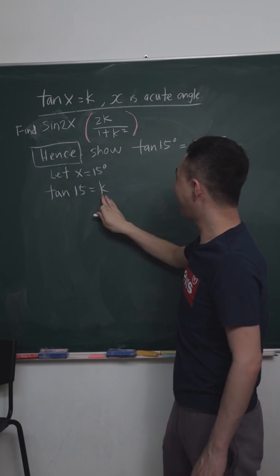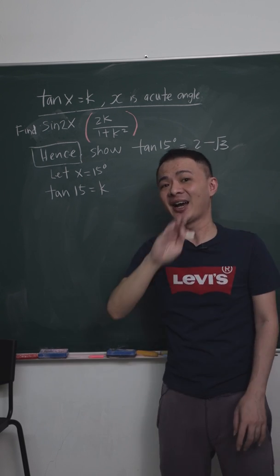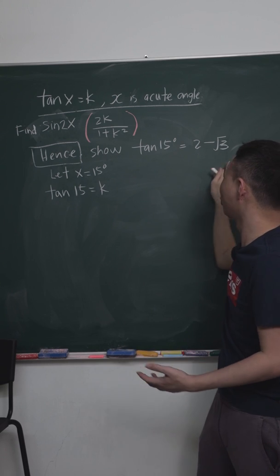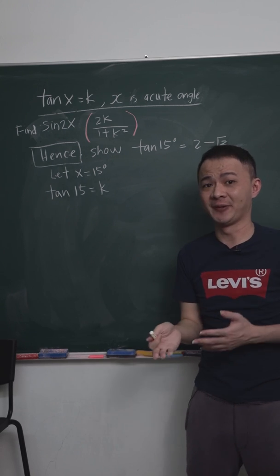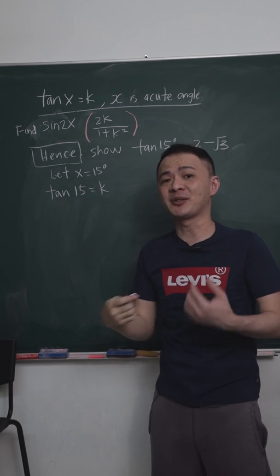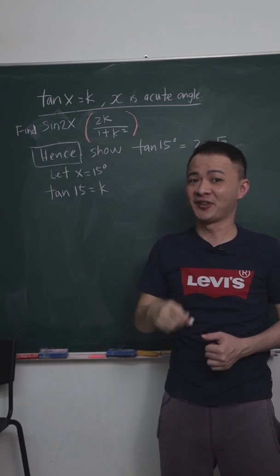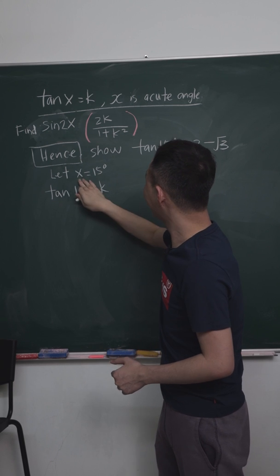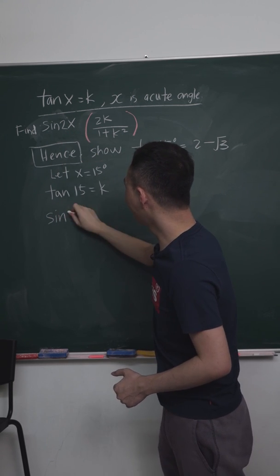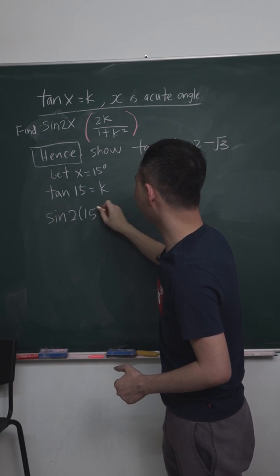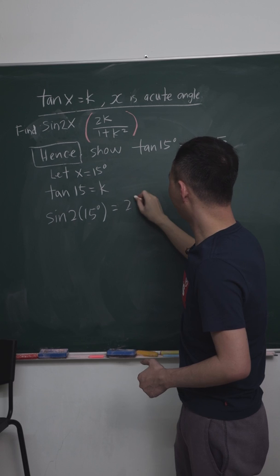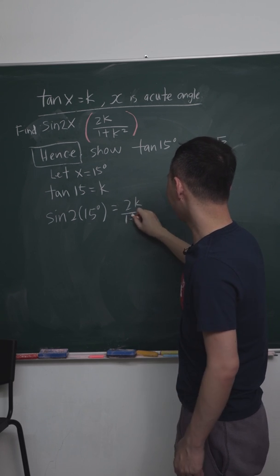Means if I can make k the subject, I can find the tangent 15. And then of course I need to show tangent 15 equals 2 minus square root 3. Second idea is, I sub the x into the sine 2x because I already did that in my first video. Therefore I sub into here, I will get sine 2 multiplied by 15 degrees, which is my x is 15 degrees, isn't it?